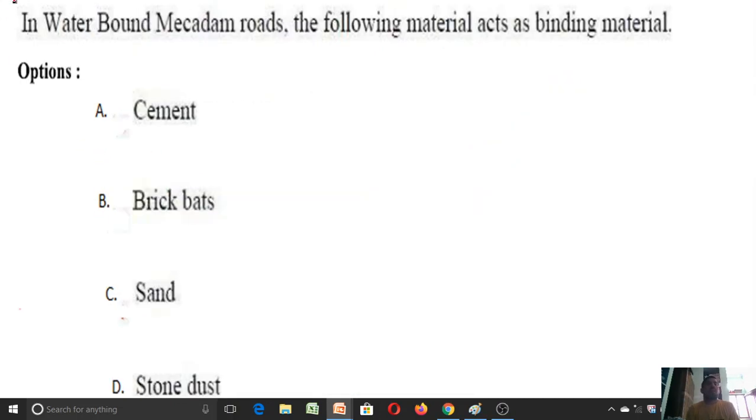In water bound macadam roads, that is WBM roads, the following material acts as a binding material: cement, brick, sand, and stone. In the given set of options, there are two binding materials, but in WBM roads the cement was not used. The stone dust will act as a binding material in WBM road. So option D is the correct answer for this question.